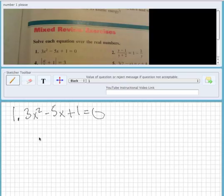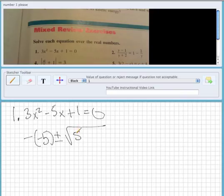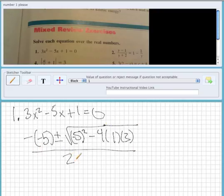So the quadratic formula is going to be negative 5 plus or minus the square root of negative 5 squared minus 4 times 1 times 3, and this is the square root all the way, then it's going to be 2 times 3.